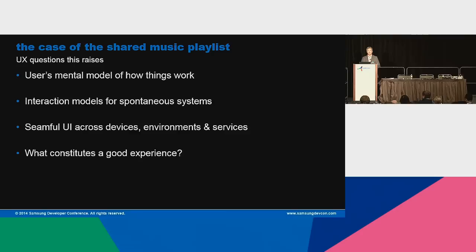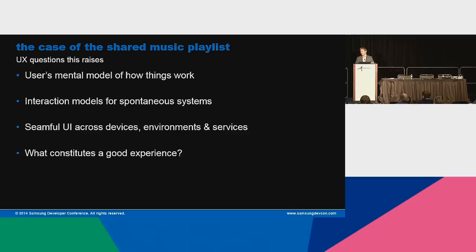Seamful UI. A lot of people in marketing like to talk about seamlessness — a seamless solution that works seamlessly across everything. If you take anything away from what I've said, it's pretty clear things are not going to be seamless. So maybe we need to think about this differently. How do we make beautiful, seamful user interaction and user experience models where we actually recognize the boundaries between things, celebrate them, make them really clear, and make the implications of crossing those boundaries clear — rather than making them invisible and trying to do things that are just perfectly automated?